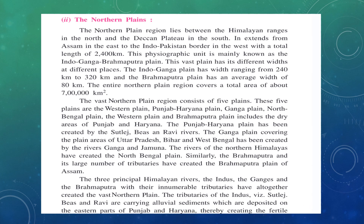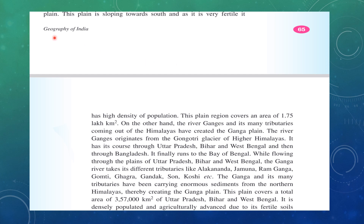Due to sediment deposition, a fertile plain area has been created, where agriculture is done very well. This plain is sloping towards the south, and as it is very fertile, it has a high density of population. Agriculture is very productive here because of the fertile plains, resulting in high population density. This plain region covers an area of 1.75 lakh km².